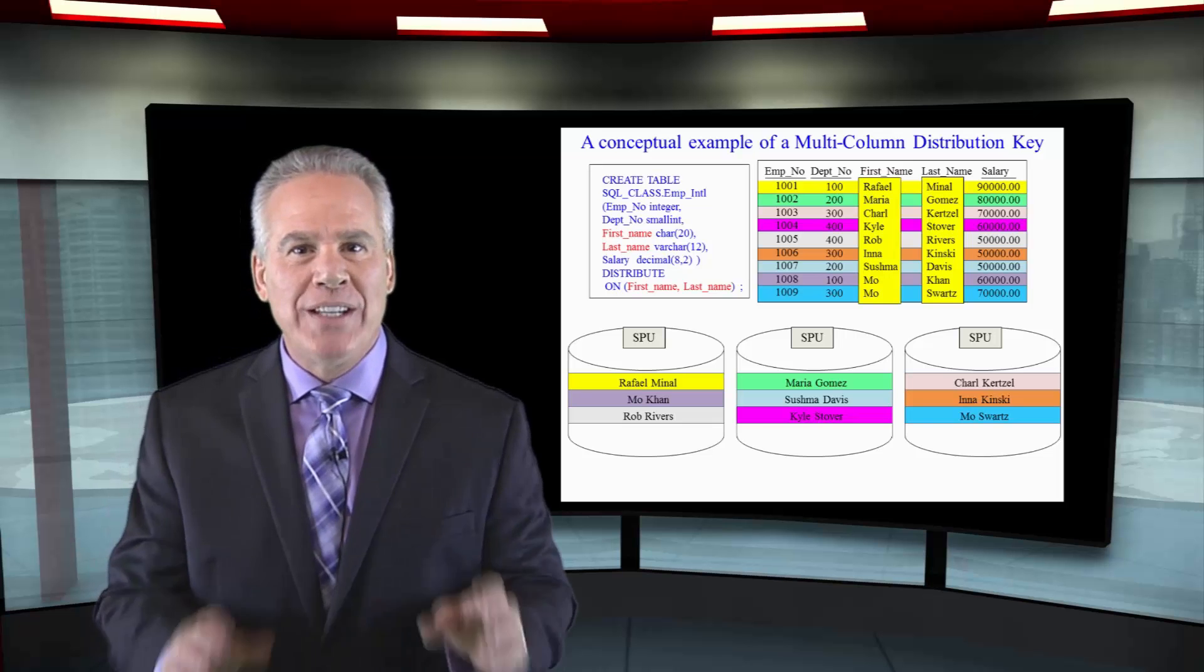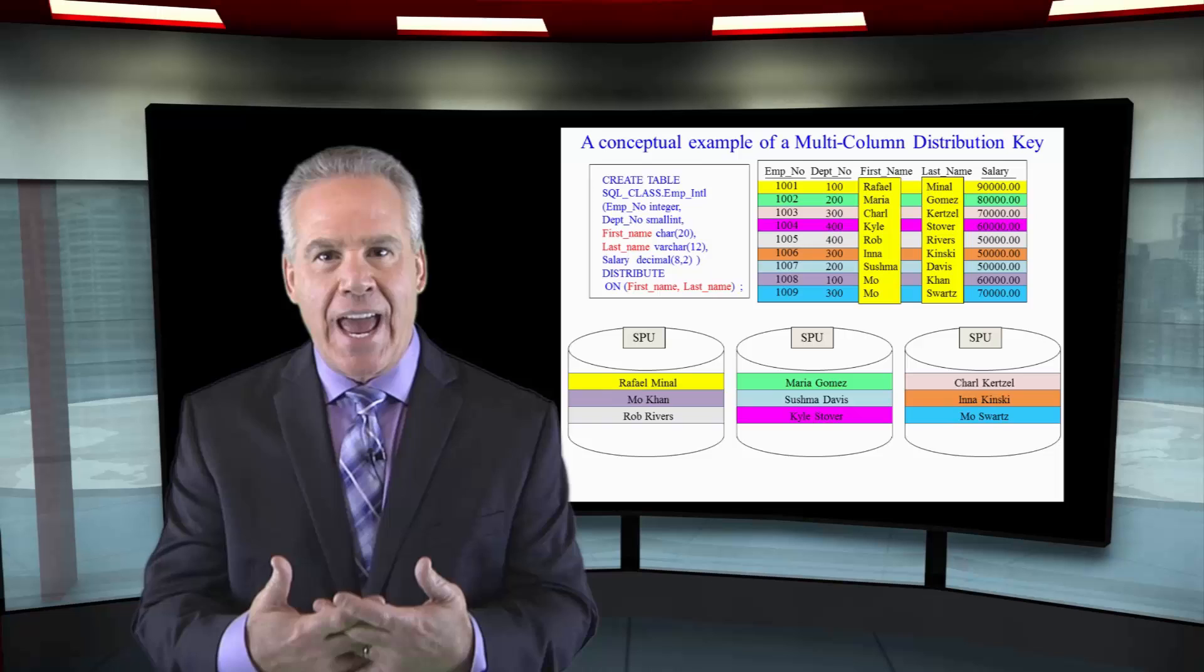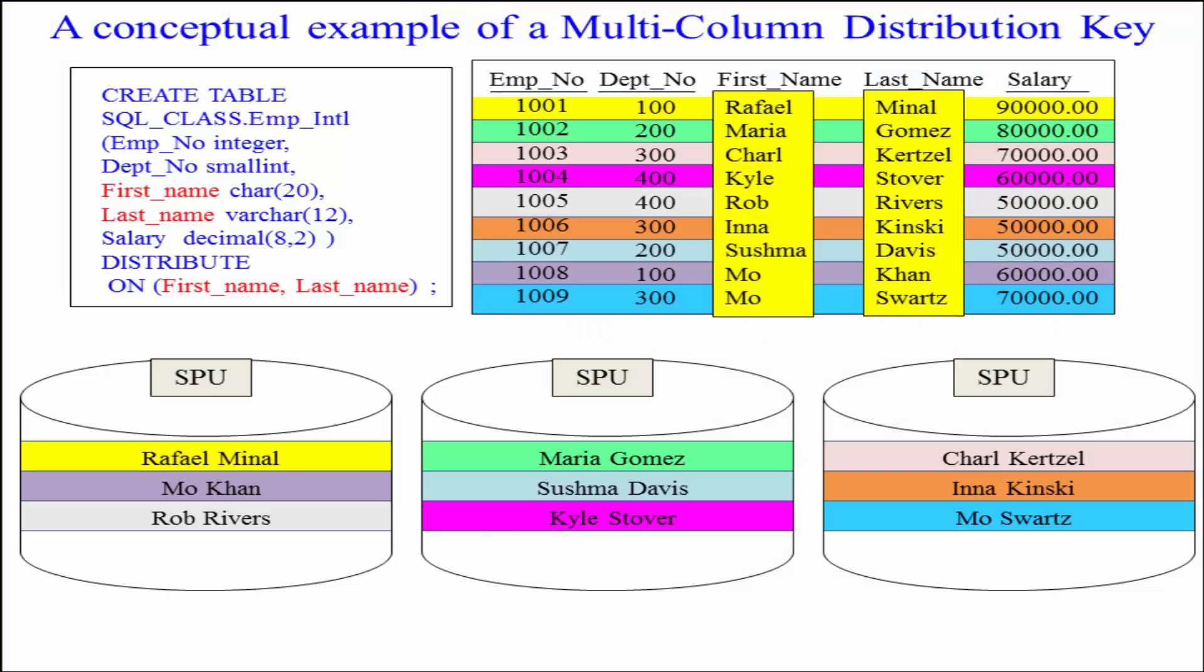Here we have a multi-column distribution key of first name and last name. Now, they'll combine those together, hash them with the formula, and they'll spread those. They're even this time because we don't have any duplicate first and last names.